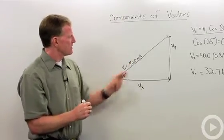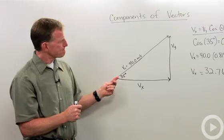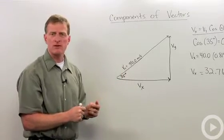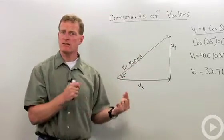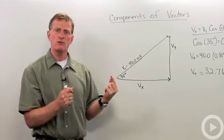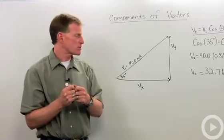So if I've got this going 40 meters per second at 35 degrees above the x-axis, what are my x and y velocities? How can I convert that? To do that, I've got to do a little trigonometry.